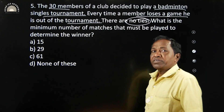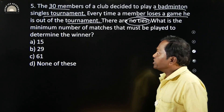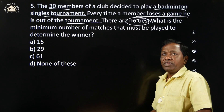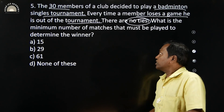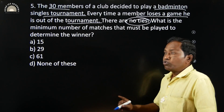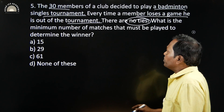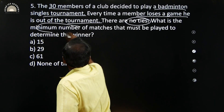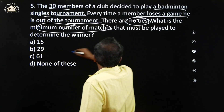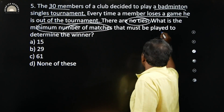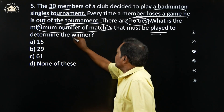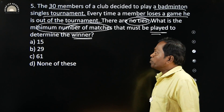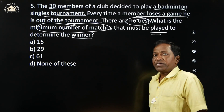This is very important: there are no ties, meaning there will always be a winner and a loser. That's all. What is the minimum number of matches that must be played to determine the winner?